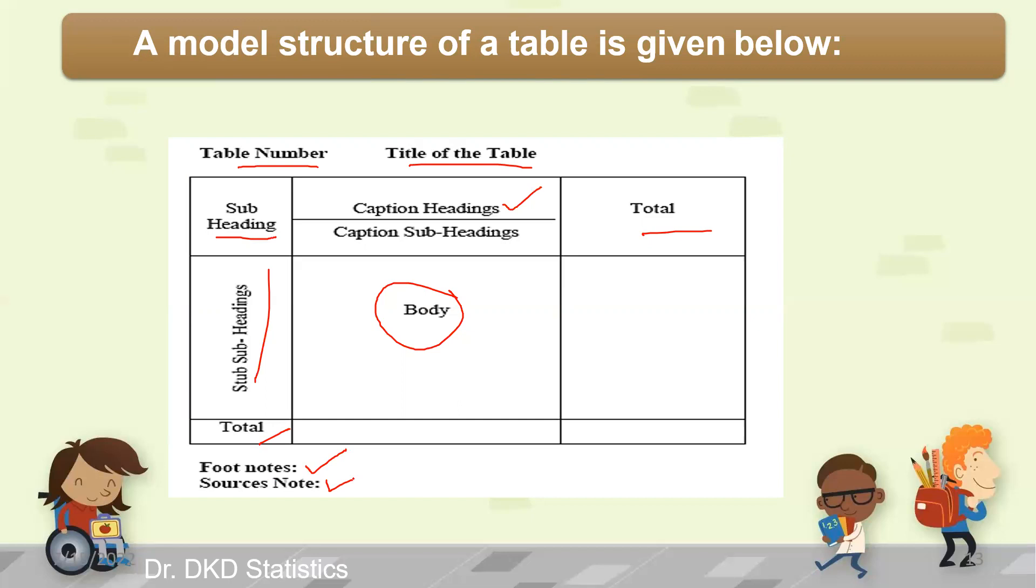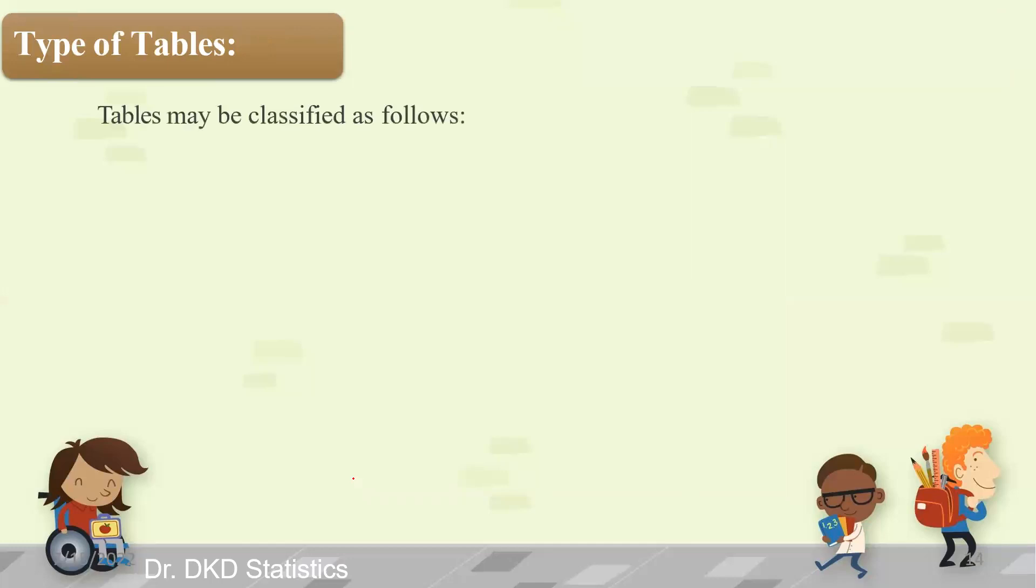Once we know all these points, there are types of tables. We can prepare simple or one-way tables, two-way tables, or manifold tables. Simple one-way tables means when we have a single variable. Two-way tables include two variables, and more than two variables considered at a time in a table comes under manifold tables. This is the basic information about tabulations. Simple tables, two-way tables, and manifold tables are discussed in detail in the next video.